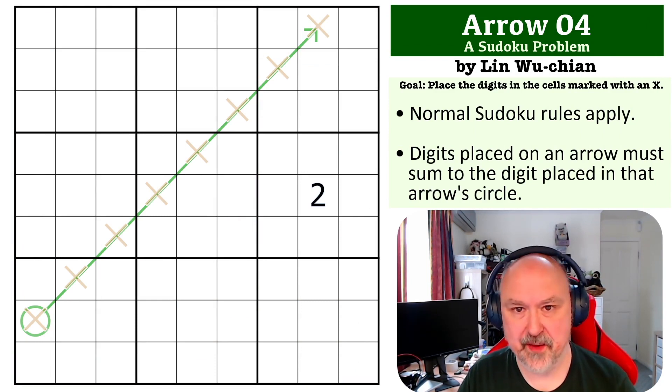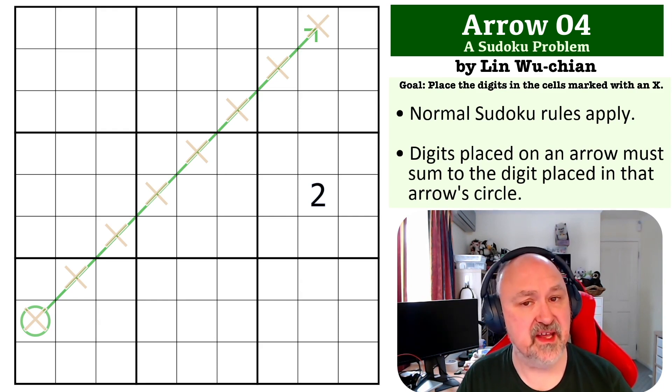Yeah, I was really happy to get the series of problems that were submitted. Link to this one below. Of course, the rules for arrows is digits that are placed on arrows must sum to the digit placed in the arrow circle.